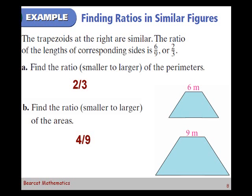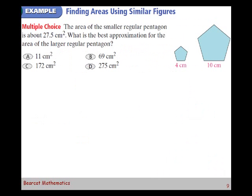Make sense so far? I'm just scratching the surface still. Go a little deeper. This is a type of multiple choice question we could run into. It says the area of the smaller regular polygon is about 27.5 square centimeters. So they're telling us the area of the smaller one is about 27.5. They're not telling us exactly, but they're giving us a pretty good estimate. It says what's the best approximation for the area of the larger regular pentagon? What do we need to look at in order to determine that?